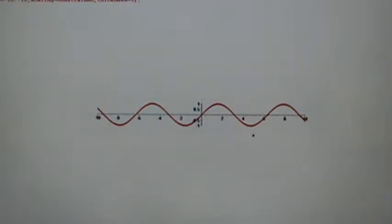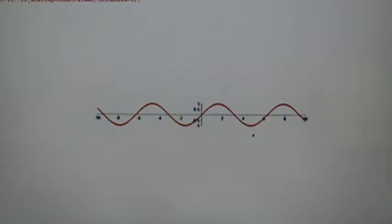Remember from your pre-calculus and college algebra days that a function has an inverse as long as the graph of that function passes both the vertical line test and the horizontal line test. It's got to pass the vertical line test or else it's not a function. And it has to pass the horizontal line test in order to have an actual inverse.